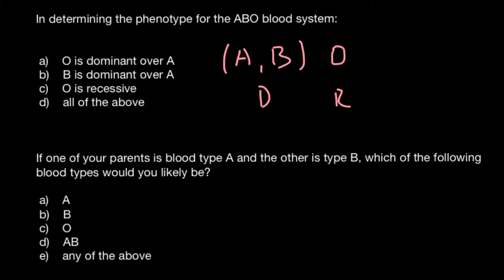O is dominant over A - as you see, this is not true. B is dominant over A - this is also not true because A and B are codominant, so we can cross out this answer. And 'all of the above' we can also cross out because we have here only one correct answer, C, that O is recessive to both A and B.